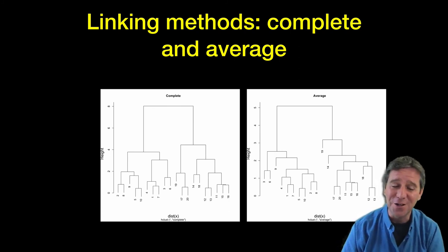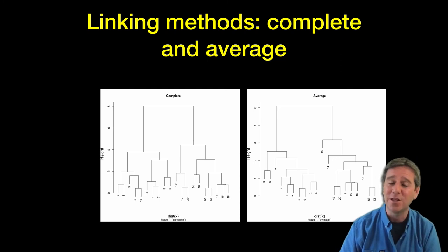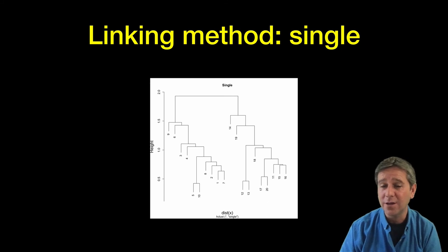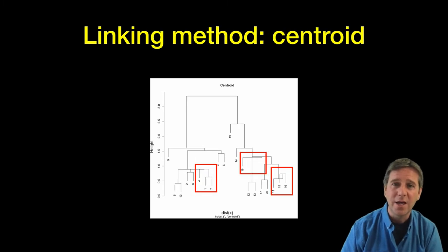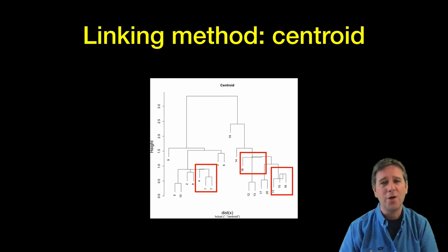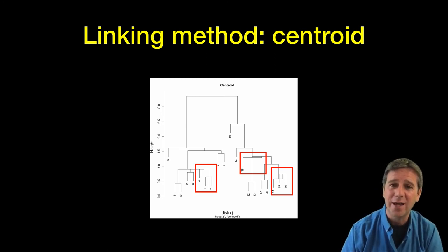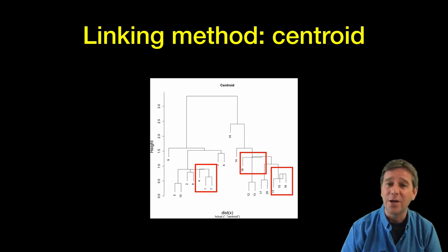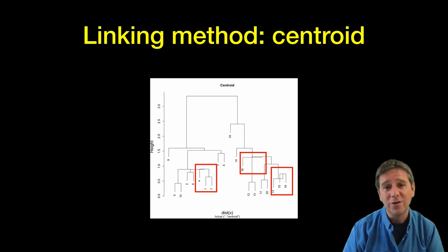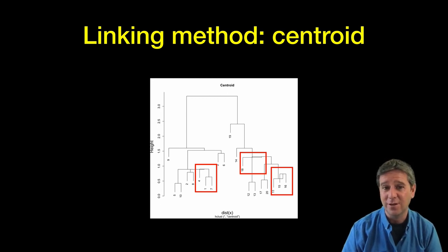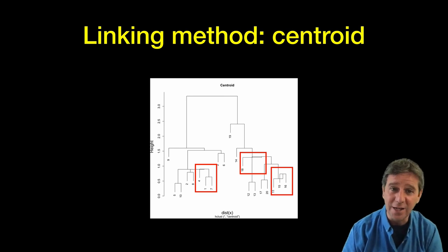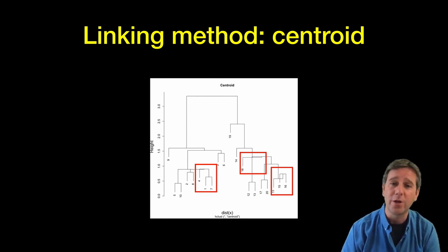Here's an example using single linkage, and again we see two main groups. Here's the result using centroid. Folks often don't like these dendrograms because of peculiar crossbar heights shown here in the red rectangles. That's because the centroid can move as you add new points to a cluster. Technically, there's nothing wrong with this and the clustering is correct, just not visually appealing. But the results are valid, and again we see two main clusters that are robust to the different methods.